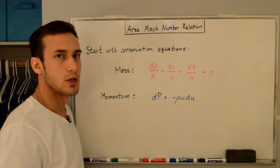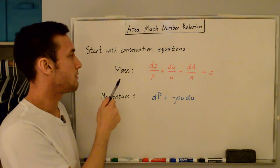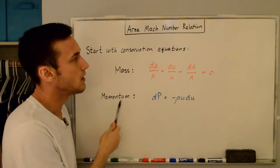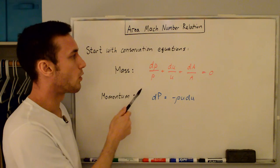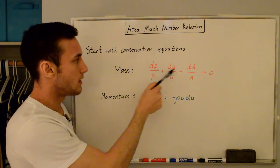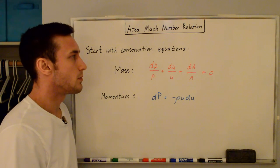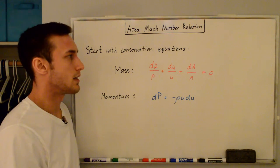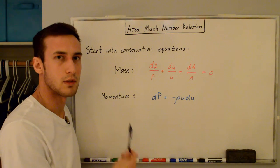We're going to be using two conservation equations in this video that you can see up here. The first is the mass conservation equation, the second is the momentum conservation equation. These are both in differential form because they relate changes in variables, and the reason we're using the differential form is because our end goal is to get an expression that relates the change in area to the change in velocity.